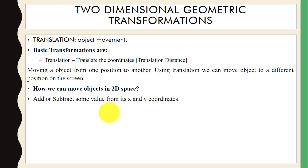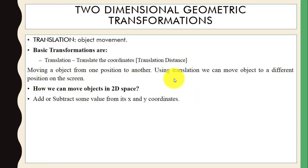Translation means object movement — we can move the object from one position to another. This is the basic transformation. We can move the object from one position to another on the screen. To move an object in 2D space, we add or subtract some value from the x and y coordinates.